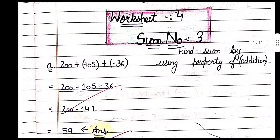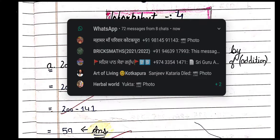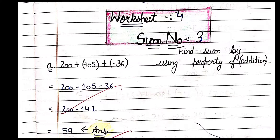You can see there are three numbers: 200 plus minus 105 plus minus 36. There are two negative integers and one positive integer. Plus minus minus — when two signs are given, we change them into a single sign. The first step is to open the bracket.